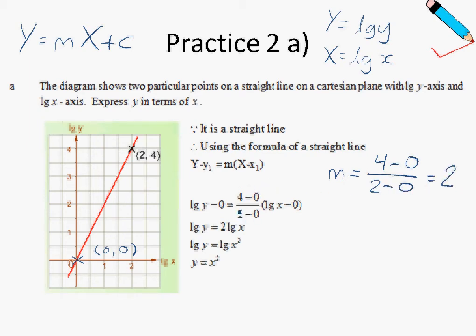So over here, we are looking for the gradient. So using this formula of a straight line, x1, I'm using the point 0, 0. So my x1 is 0, and y1, since I'm using this point 0, 0, my y1 is 0. So solving this equation over here, I will get log y equals to 2 log x.